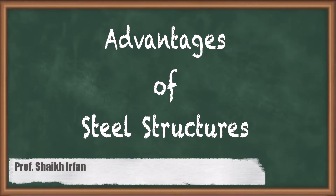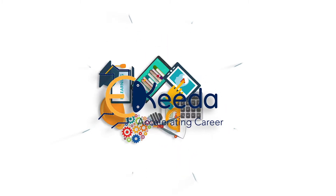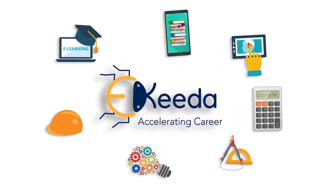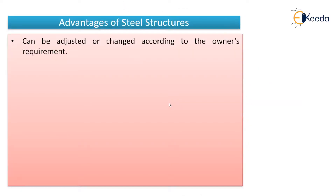Hello everyone. In this video we are going to see the advantages of steel structures — what advantages does steel possess when used as a construction material. The first advantage of using steel as a construction material is that it can be adjusted or changed according to the owner's requirement.